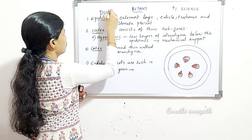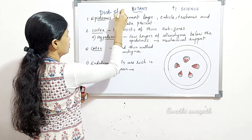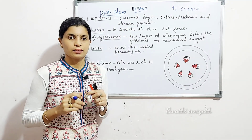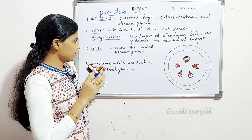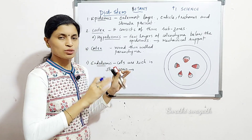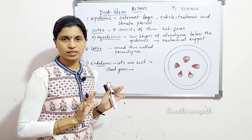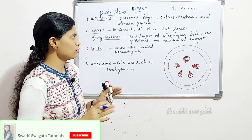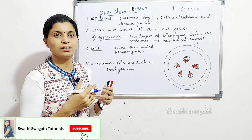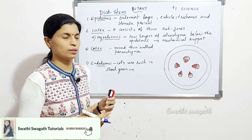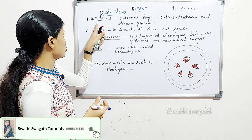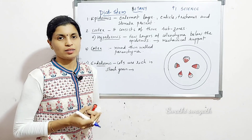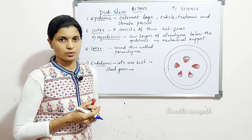Anatomy of dicot stem. The anatomy has the following three regions: the first one is epidermis, then cortex, and the third part is stele.